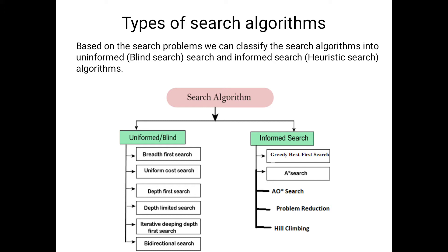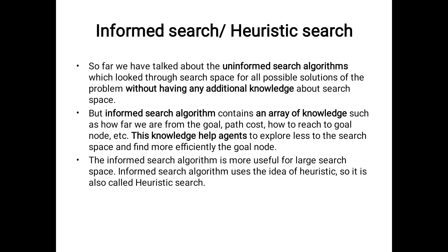In today's session we will move to the A* searching algorithm. The main difference between uninformed search and informed search is that agents don't know any information in uninformed search, but in informed search the agents contain some knowledge about goals, path cost, and how to reach the goals. This information is available with the help of heuristic values. The heuristic function helps to find out the best path and give the best solution in real-time situations.